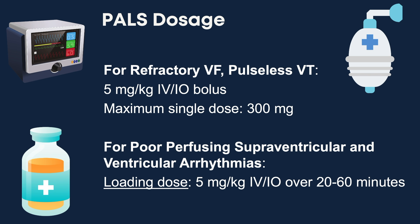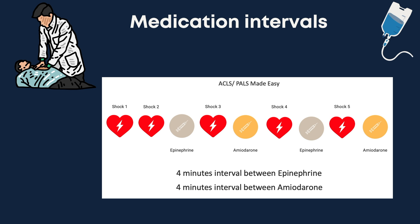For the PALS dosage, for refractory VF or pulseless VT, we can give 5 mg per kg IV, repeating the 5 mg per kg bolus up to a total dose of 15 mg per kg. Keep in mind that adolescents cannot exceed 2.2 g in 24 hours. The maximum single dose in pediatric resuscitation is 300 mg. For poor-perfusing supraventricular and ventricular arrhythmias, the loading dose is 5 mg per kg IV given over 20 to 60 minutes. For pediatric patients in VF or pulseless VT, we can follow the same sequence as shown on the previous slide.